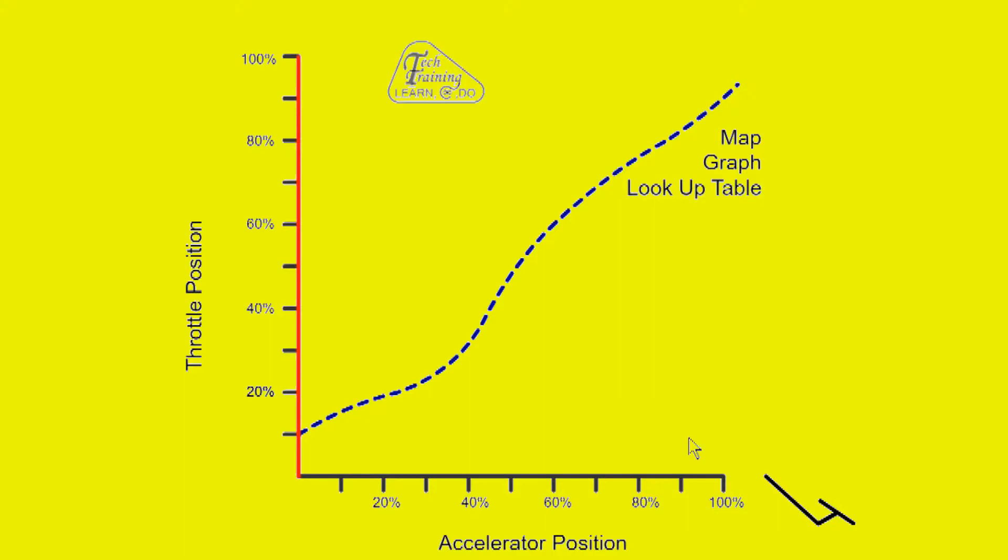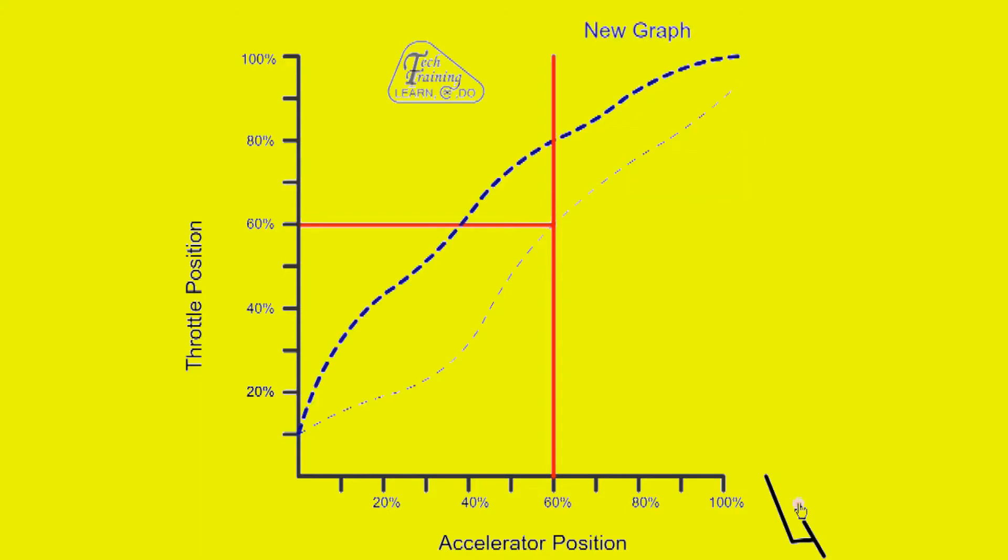Here we look at the basic example of an ECU map graph or lookup table. The input is the accelerator position sensor and the output is throttle position. In the past they were directly linked by the accelerator cable. Now fly-by-wire is used, but in this demo both have a range of 0-100%. As the accelerator is pressed, we get a corresponding change in the throttle position according to the graph. At 60% accelerator position, the throttle position is also 60%. Assume the driver wants a more responsive engine and gets the ECU remapped with new software. Now with the new graph, instead of 60% we have 80% throttle opening.